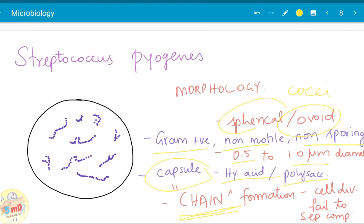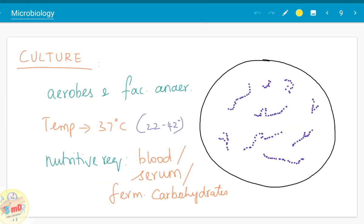Chain formation is the classical feature of Streptococcus pyogenes. It happens because the cells after division fail to separate completely. The divided cells form a chain. The daughter cells are attached one to another. Therefore, chain formation is a characteristic feature in Streptococcus pyogenes.